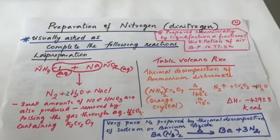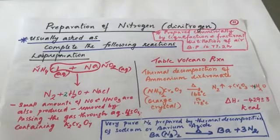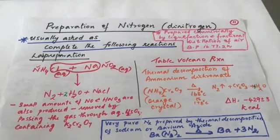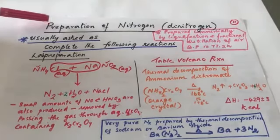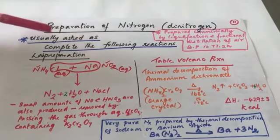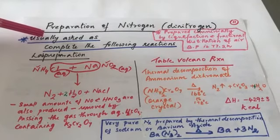Welcome to another session of the nitrogen family — this is part three. Here we see the preparation of dinitrogen. It was initially called nitrogen but nowadays it is called dinitrogen, and in your textbook it is listed as preparation of dinitrogen. Nobody usually asks what is the preparation of dinitrogen in board papers — what is usually asked is to complete the following reactions.